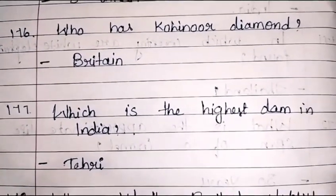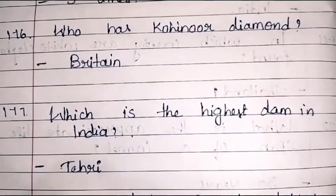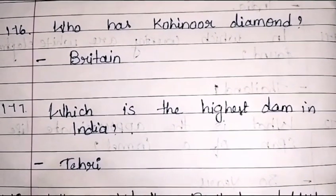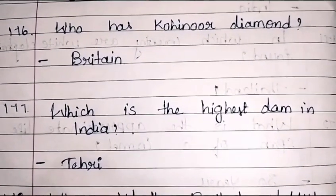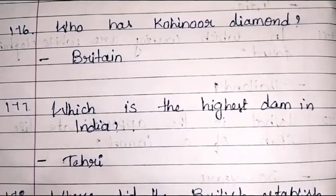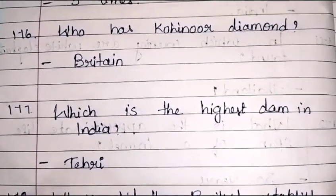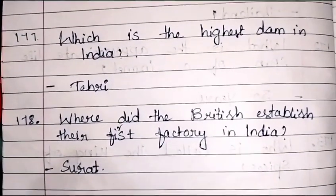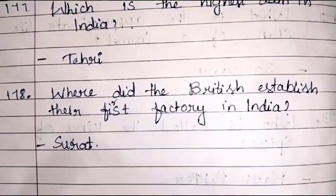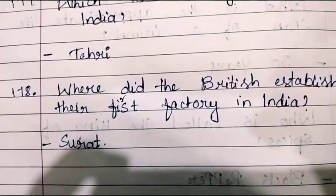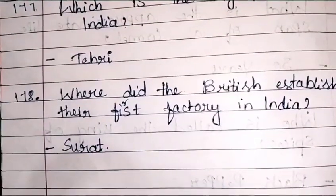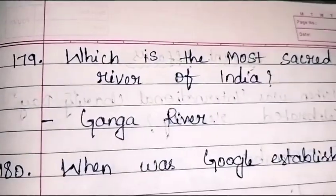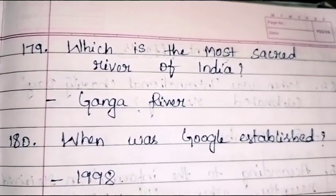Which is the highest dam in India? It is Tehri Dam. Tehri Dam is the highest dam in India. Where did the British establish their first factory in India? It is in Surat. The British established their first factory in India in Surat.